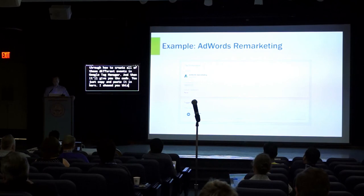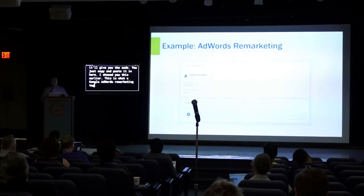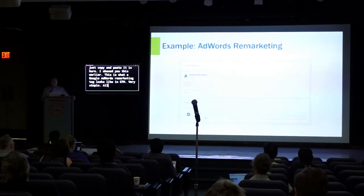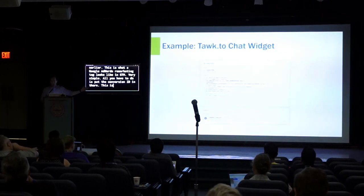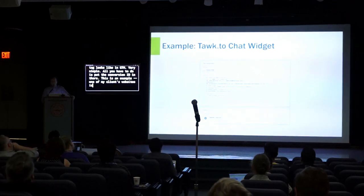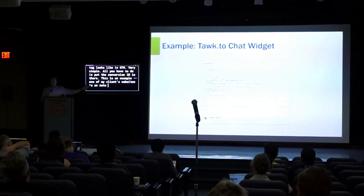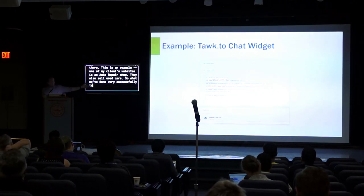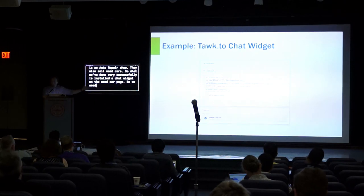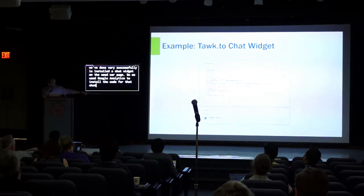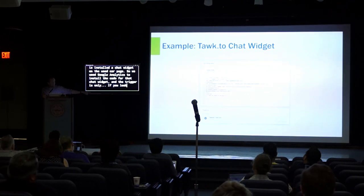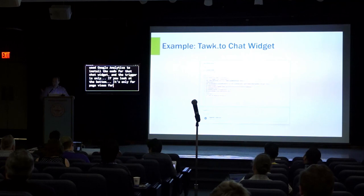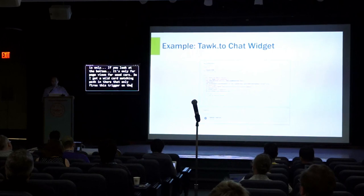I showed you this earlier — this is what a Google AdWords remarketing tag looks like in GTM. Very simple, all you have to do is put the conversion ID in there. This is an example from one of my clients — a website for an auto repair shop that also sells used cars. What we've done very successfully is installed a chat widget on the used car page using Google Analytics to install the code for that chat widget, and the trigger only fires for page views for used cars. I've got a wildcard matching path in there that only fires this trigger on the pages I want.